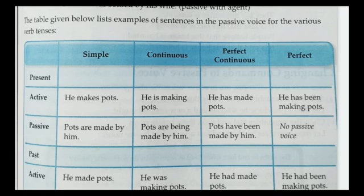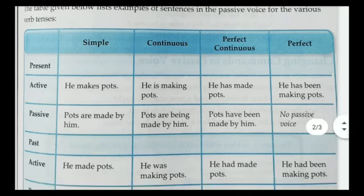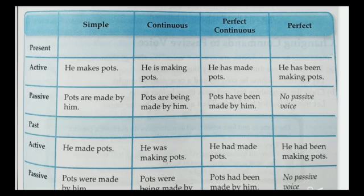The table below gives examples of passive voice for various verb tenses. For simple present: 'He makes pots' — object 'pots' comes forward, use 'are' (is/am/are according to subject), and the third form 'made': 'The pots are made by him.' For present continuous: 'He is making pots' — use 'being' before the third form: 'The pots are being made by him.'